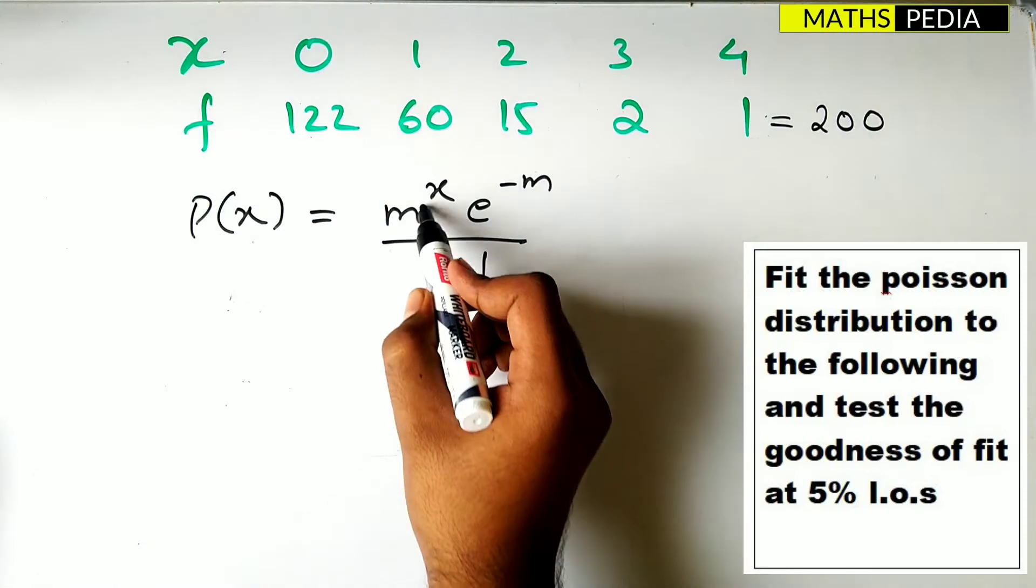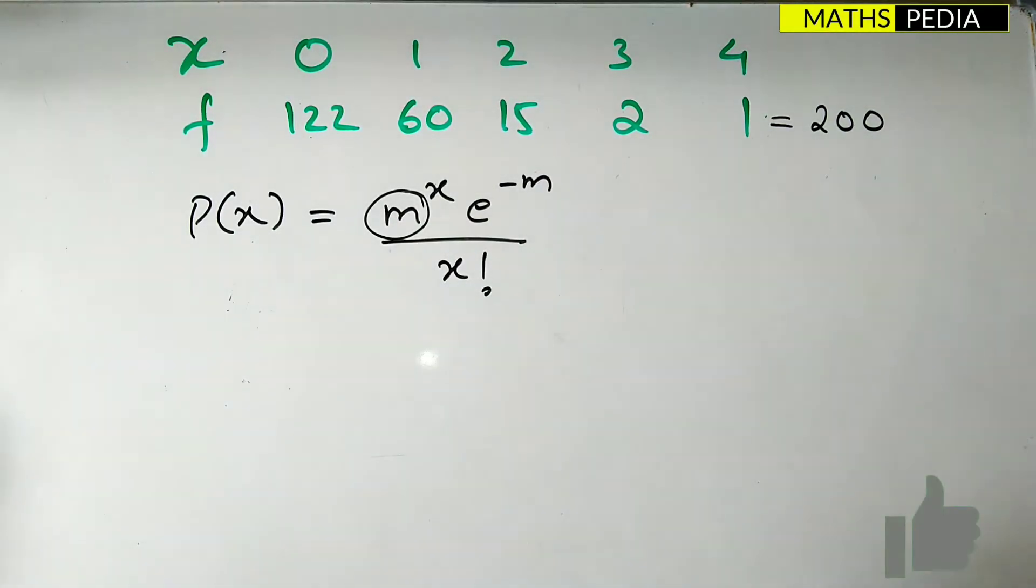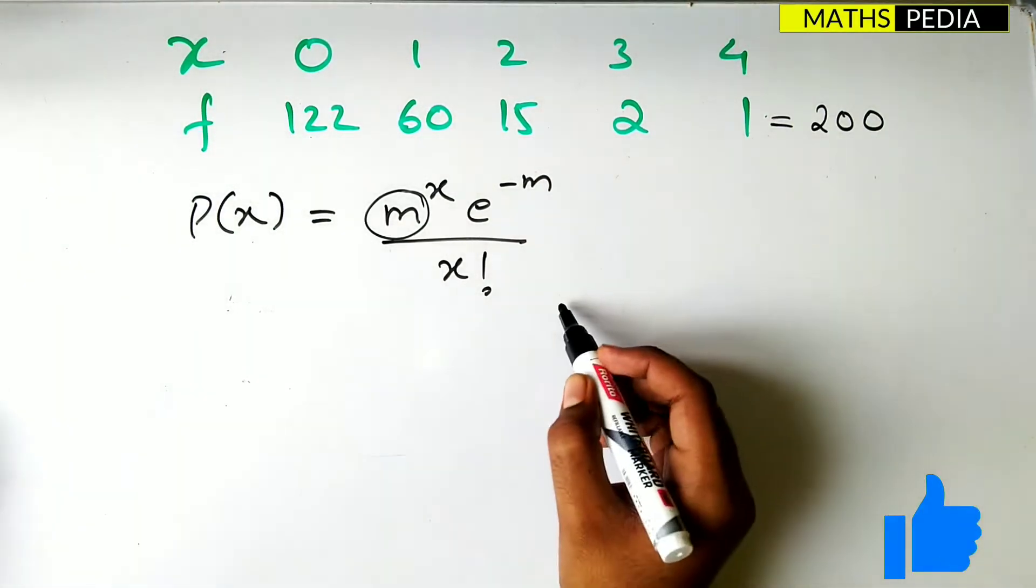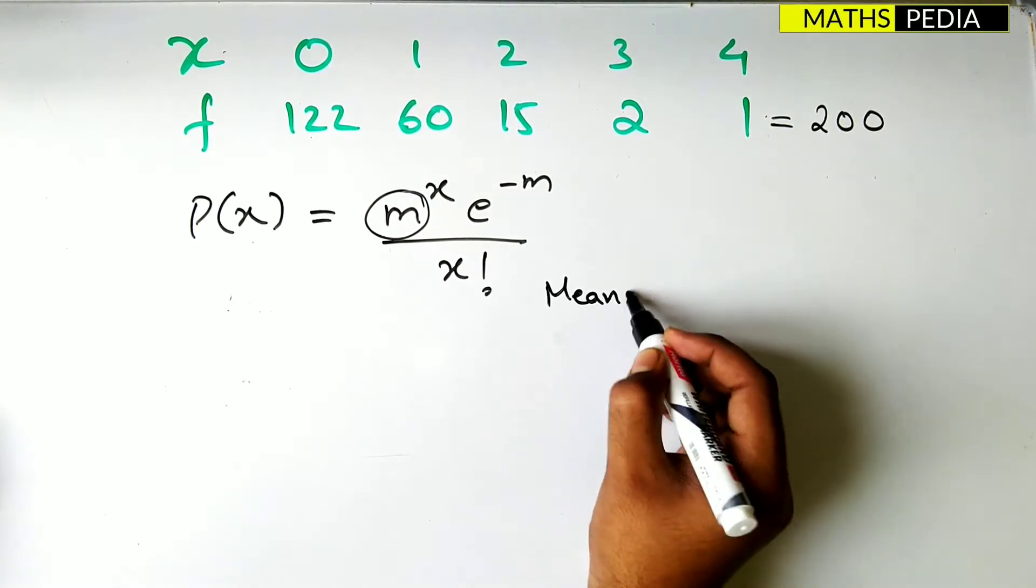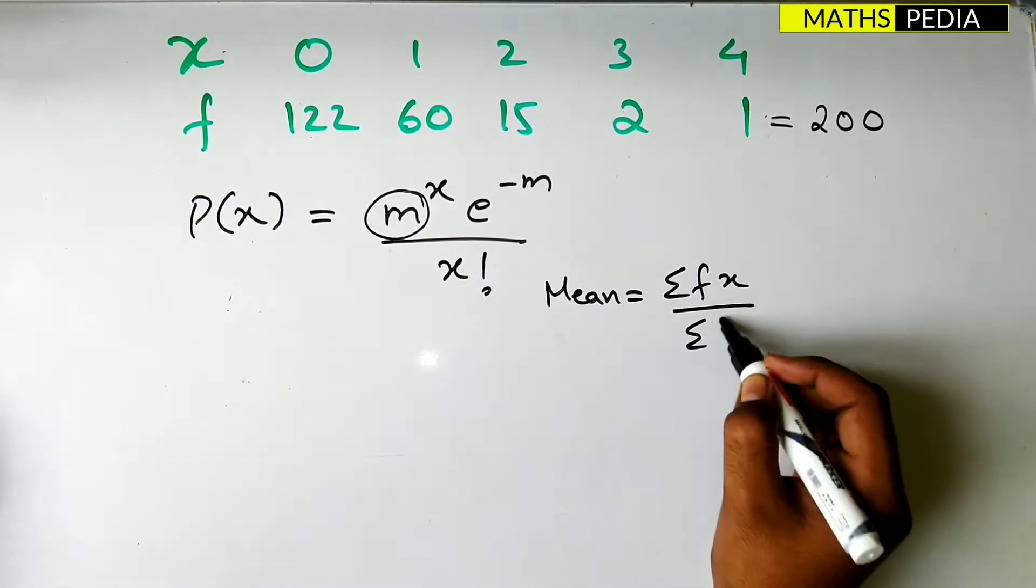Now here m is the mean. How to find mean here? Mean is basically the same formula. So it is the same formula. Summation of fx by summation of f.